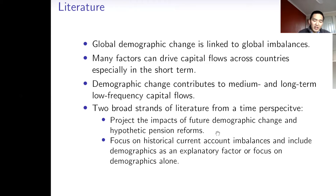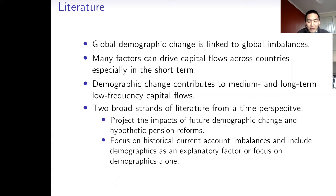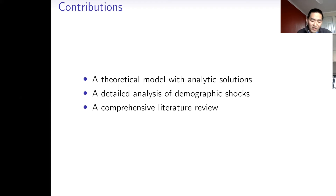The literature falls into two broader strands from a time perspective. One strand projects the impacts of future demographic change and hypothetical pension reforms, illustrating how future demographic change shapes the landscape of the world economy and providing guidance for future pension policies. The other strand focuses on historic current account imbalances, including demographics as an explanatory factor, and estimates how much demographic change contributed to historic global imbalances. My contribution is threefold: I build a theoretical model with analytic solutions, do a detailed analysis of demographic shocks, and conduct a comprehensive literature review.